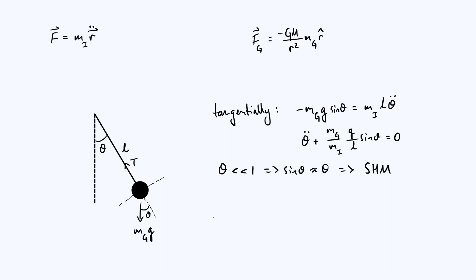The coefficient of theta, this combination of two fractions multiplied together, is omega squared, where omega is the angular frequency of the SHM. So omega squared equals mg over mi times g over L. Because the period of the oscillation is 2 pi over omega, we conclude that the period is 2 pi times the square root of mi over mg times L over g.